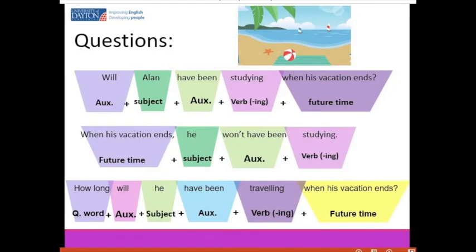Here is another example of an information question using 'how long.' 'How long' refers to the duration of something — for example, 'How long is your vacation?' The duration of my vacation is probably one week, two weeks, three weeks, etc. So 'how long' refers to the duration of a period of time. In this case the question is: 'How long will he have been traveling when his vacation ends?' We should respond with a length of time.